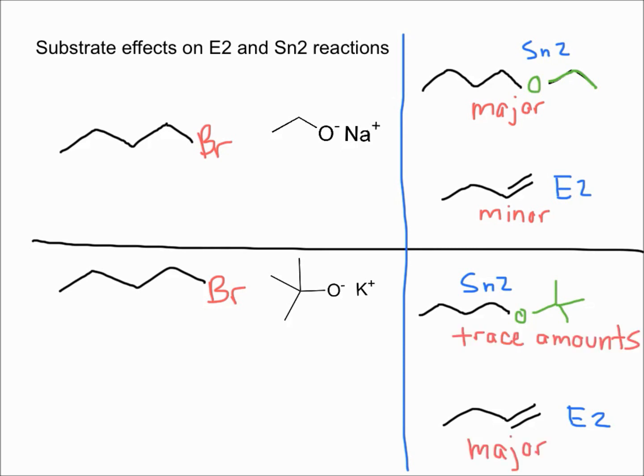On the other hand, if we react this molecule with tert-butoxide, you're going to get very trace amounts, so essentially no SN2 product. The major product is going to be your E2 product.